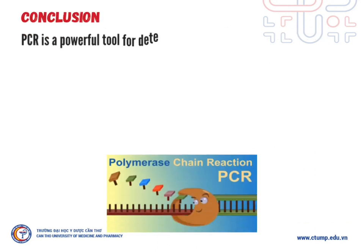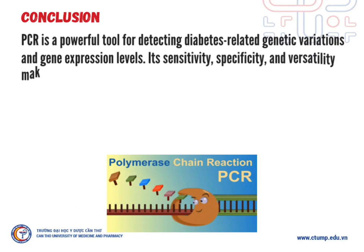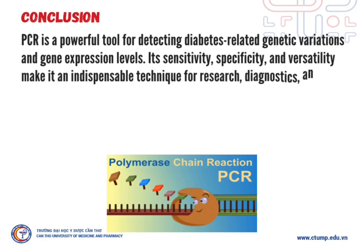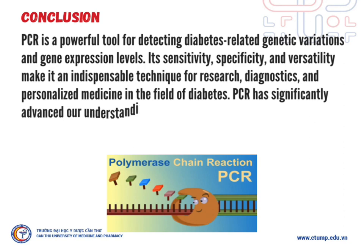Conclusion. PCR is a major tool for detecting diabetes-related genetic variations and gene expression levels. Its sensitivity, specificity and versatility make it an indispensable technique for research, diagnostics and personalized medicine in the field of diabetes. PCR has significantly advanced our understanding of the genetic factors contributing to diabetes.